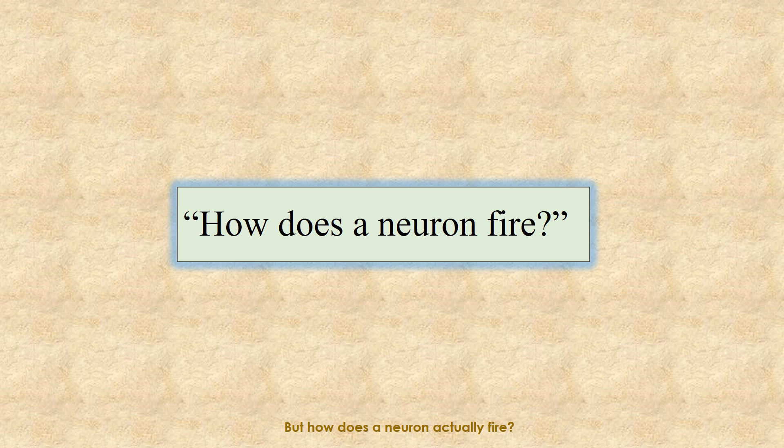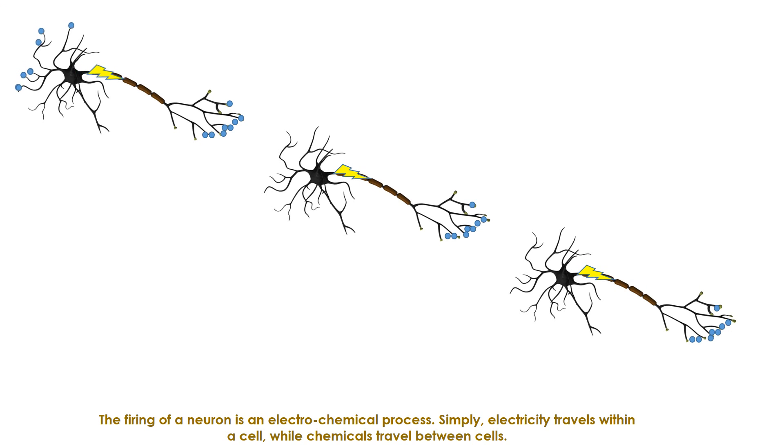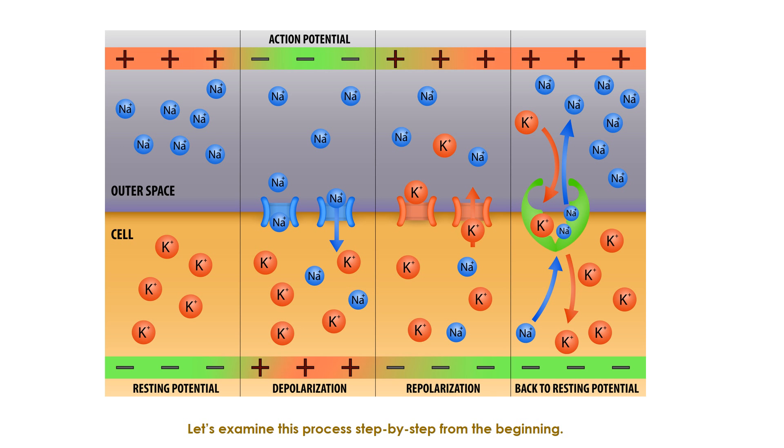But how does a neuron actually fire? The firing of a neuron is an electrochemical process. Simply, electricity travels within a cell while chemicals travel between cells. Let's examine this process step by step from the beginning.